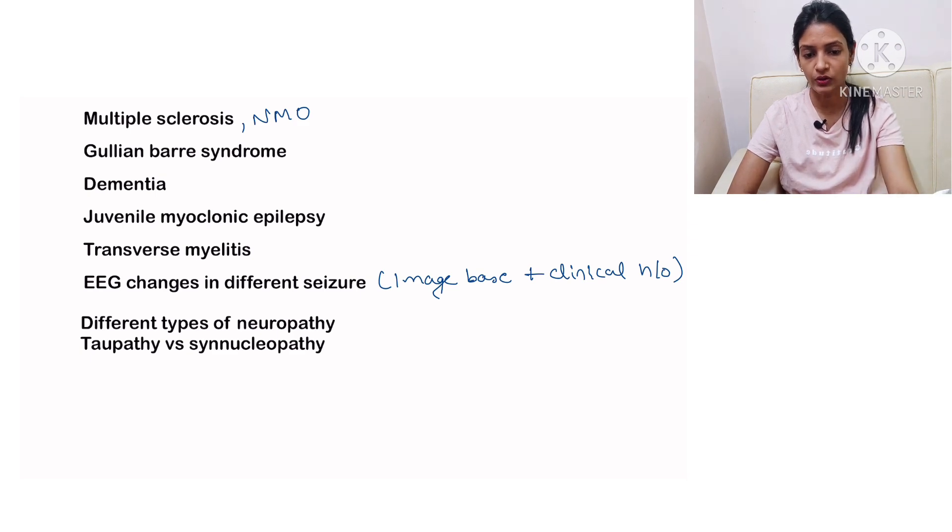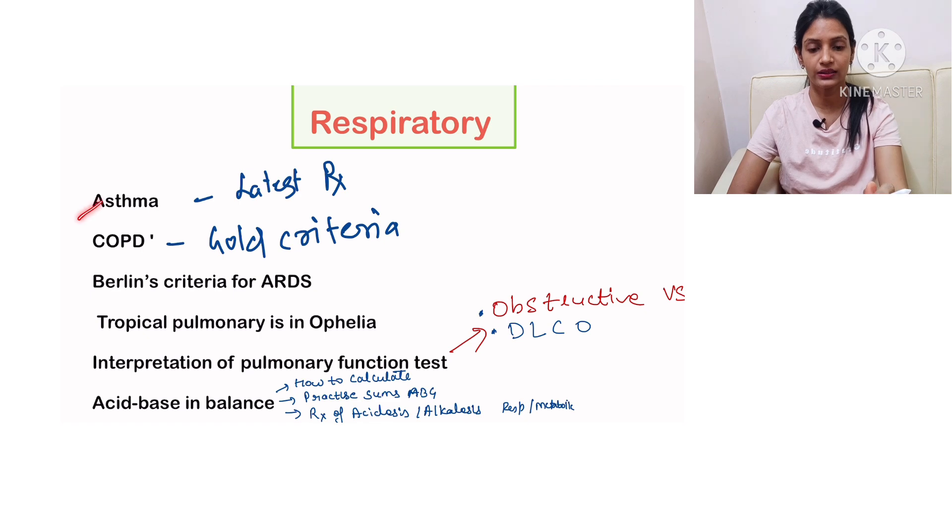This was all about the CNS unit. Next, switch on to the respiratory unit. In respiratory unit they can ask you about asthma—you should be reading the latest treatment guidelines for asthma, then COPD.